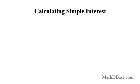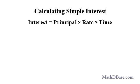Simple interest is calculated based on the principal, the rate of interest that is charged, and the period of time that the principal remains outstanding or unpaid. Simple interest can be calculated using the formula: interest equals principal times rate times time, or I equals P times R times T, which is equal to PRT.